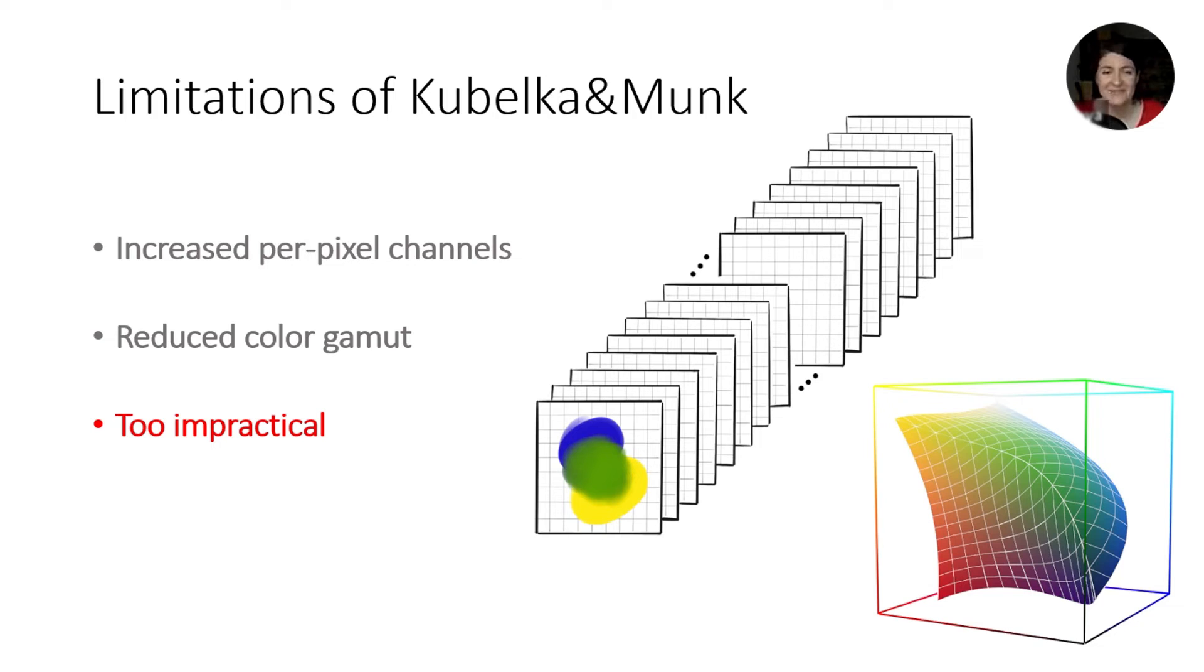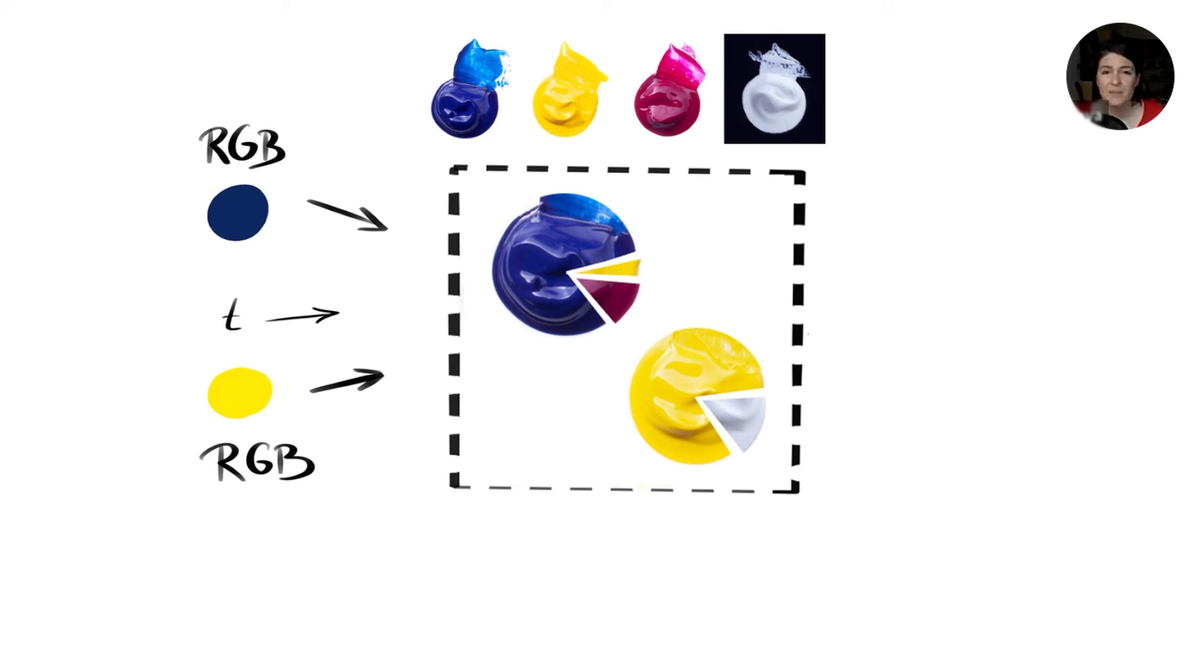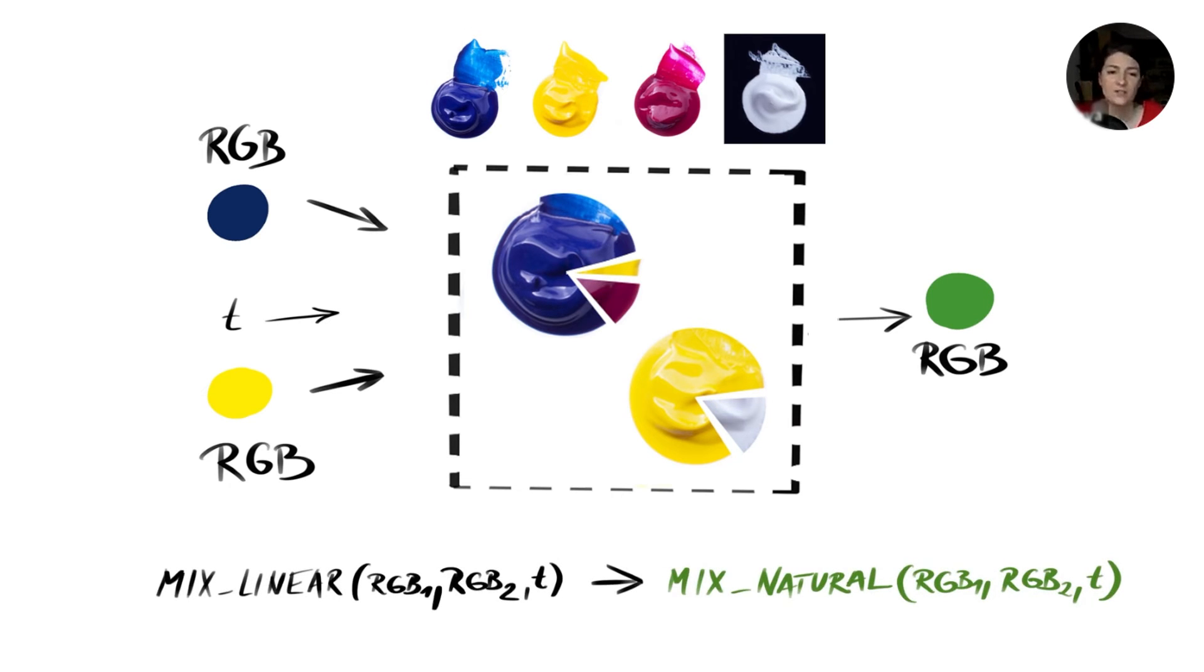And that's what we did. We created this black box that takes two RGB colors, arbitrary RGB colors, and represents each of them as a mixture of four selected primary pigments. And then it uses Kubelka Munk to mix them together and it outputs the final RGB. We call this MixBox and it's really easy to plug into any existing painting software because it's literally just a drop-in for the current mixing function. They have the same attributes.